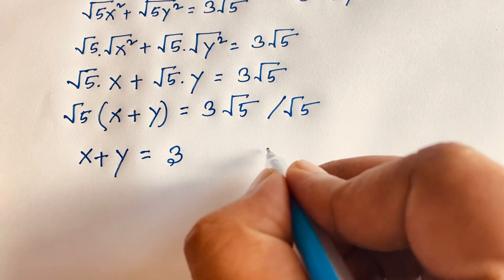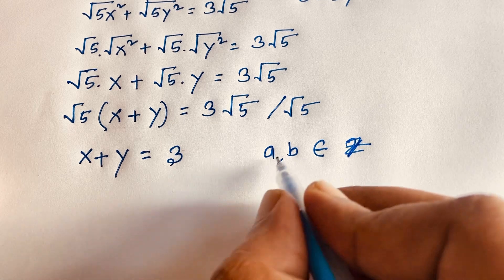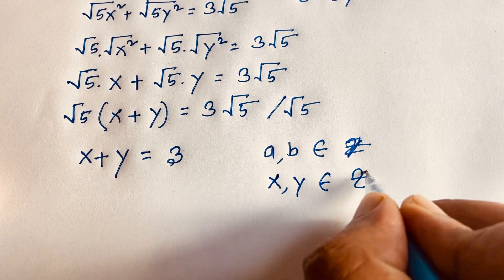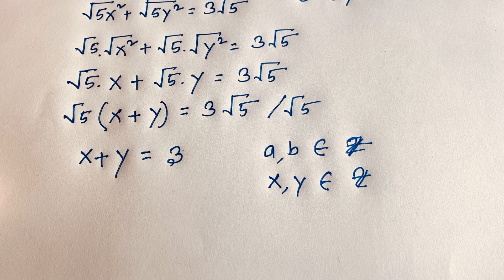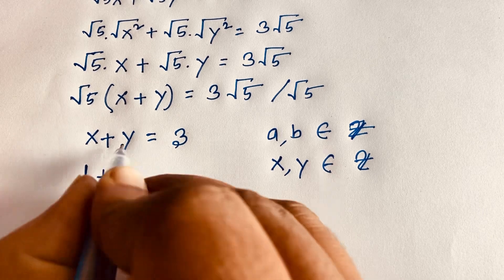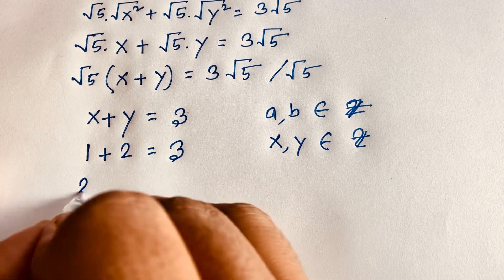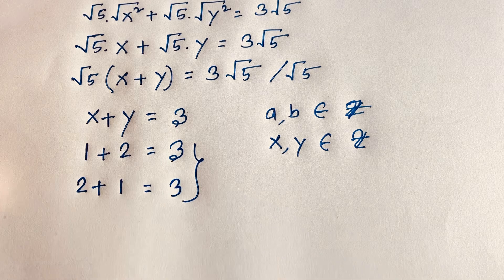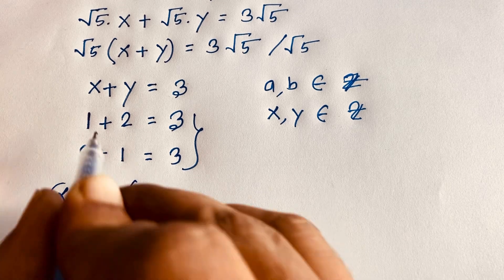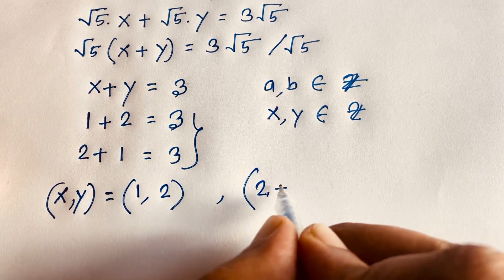Remember that A and B are positive integers, so x and y are also positive integers. Since x plus y equals 3, there are two cases: Case 1 — x equals 1 and y equals 2, giving 1 plus 2 equals 3. Case 2 — x equals 2 and y equals 1, which also gives 3.